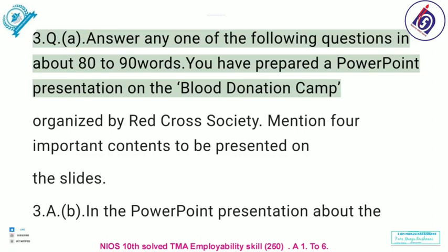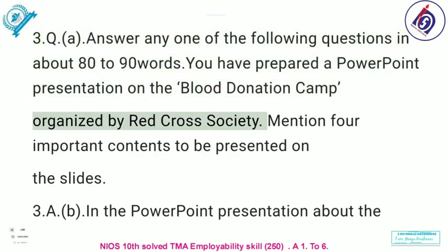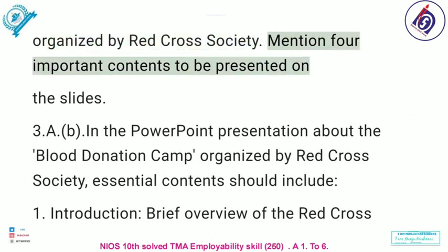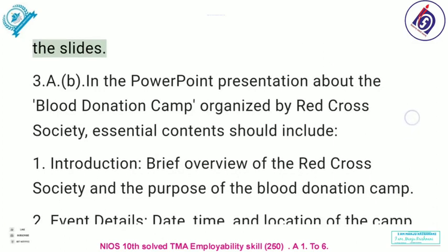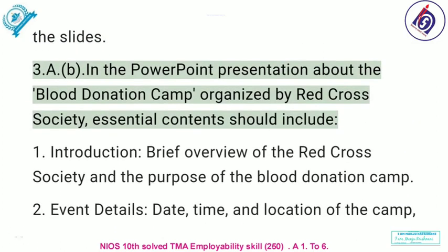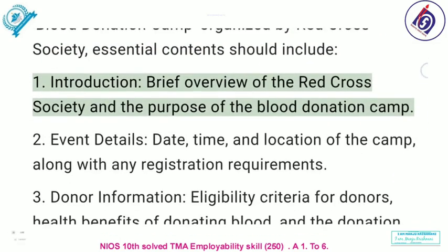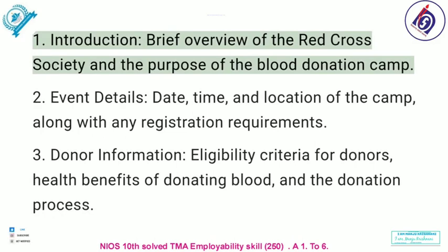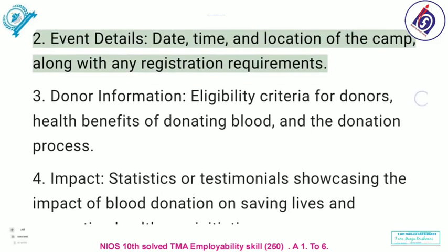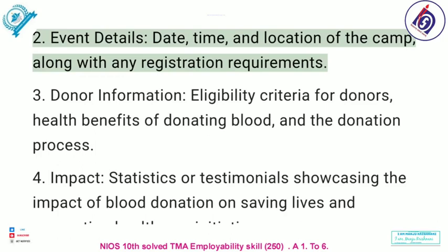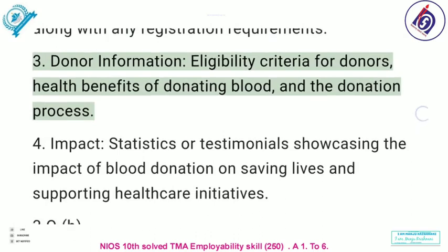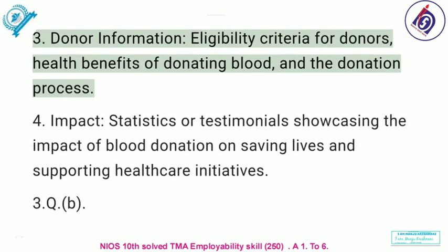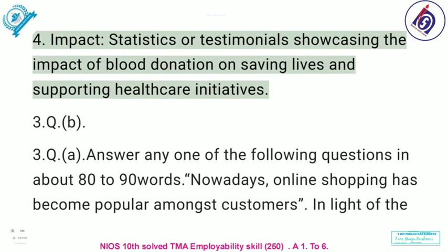Answer any one of the following questions in about 80 to 90 words. You have prepared a PowerPoint presentation on the blood donation camp organized by Red Cross Society. Mention four important contents to be presented on the slides. In the PowerPoint presentation about the blood donation camp organized by Red Cross Society, essential contents should include: one, introduction — brief overview of the Red Cross Society and the purpose of the blood donation camp; two, event details — date, time, and location of the camp along with any registration requirements; three, donor information — eligibility criteria for donors, health benefits of donating blood, and the donation process; four, impact — statistics or testimonials showcasing the impact of blood donation on saving lives and supporting healthcare initiatives.